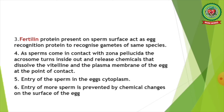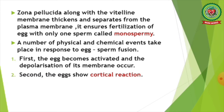As sperms come in contact with the zona pellucida, the acrosome turns inside out and releases chemicals that dissolve the vitelline membrane and the plasma membrane of the egg at the point of contact. The fifth point is entry of sperm into the egg cytoplasm. The entry of more sperms is then prevented by chemical changes on the surface of the egg. The zona pellucida along with the vitelline membrane thickens and separates from the plasma membrane, ensuring fertilization of the egg with only one sperm — called monospermy.